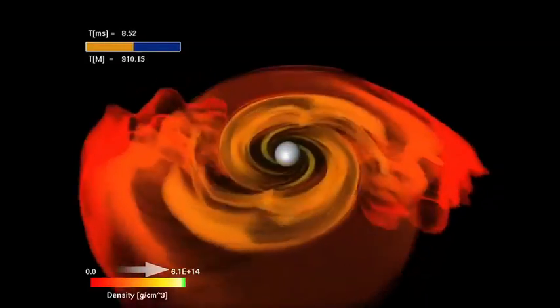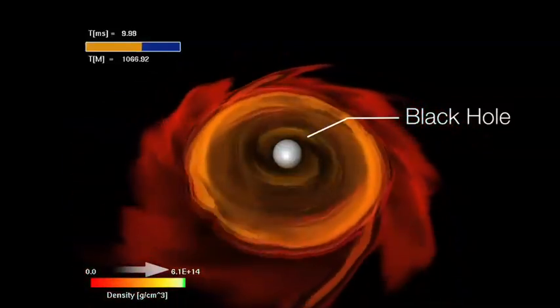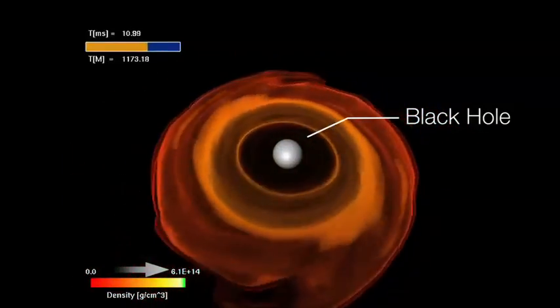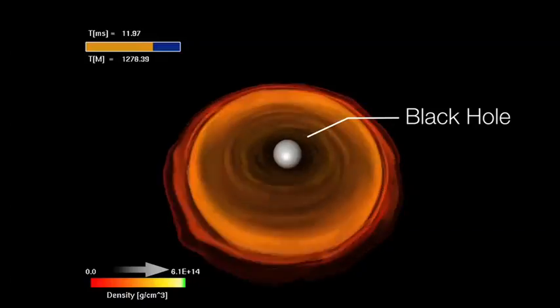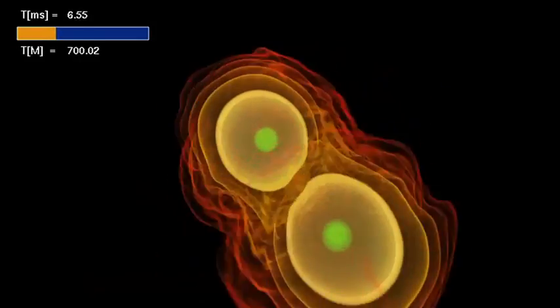Earlier simulations demonstrated that mergers could make black holes. Others had shown that the high-speed particle jets needed to make a gamma-ray burst would continue if placed in the swirling wreckage of a recent merger.